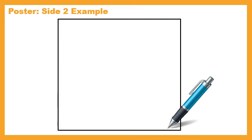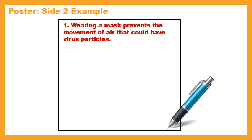On side two, we're explaining how each of our ways to prevent the spread of COVID will actually help stop the spread. For example, on my poster I said we could wear a mask, and I'll explain how this prevents the spread: 'Wearing the mask prevents the movement of air that could have virus particles.' We watched that Bill Nye video where he tried to blow out a candle, and when he had the mask on he was unable to, because even a homemade mask will stop the movement of air.